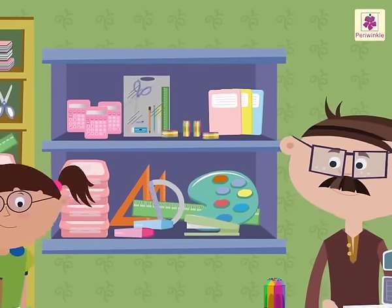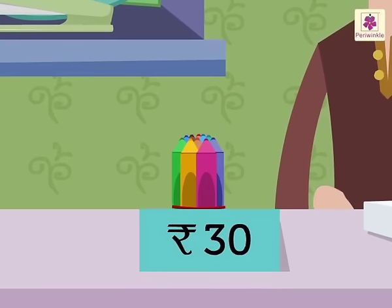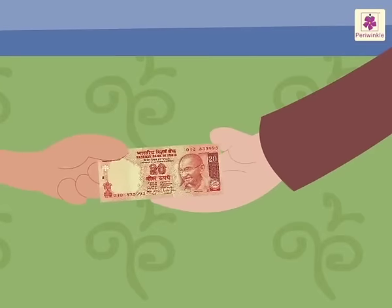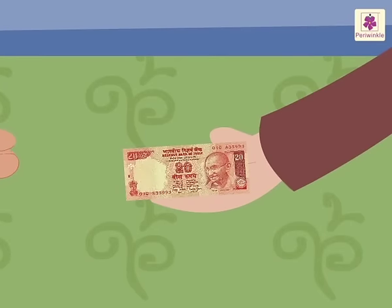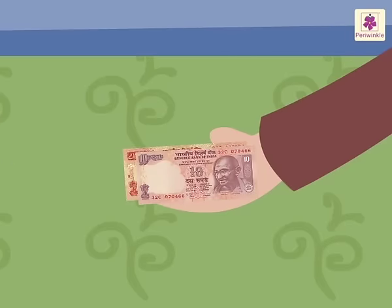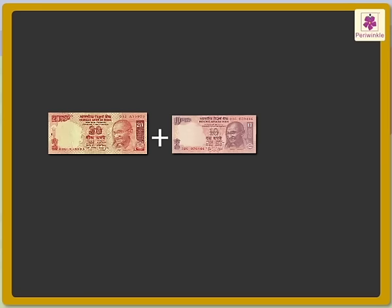Now Saira goes to a stationary shop. She wants to buy crayons. The cost of the crayons is 30 rupees. Saira gives a 20 rupee note and one more 10 rupee note. It means she gave 20 plus 10 is equal to 30 rupees to the shopkeeper.